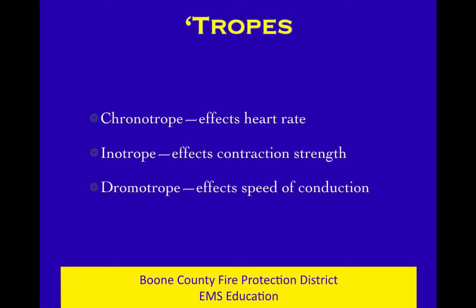Now we get to talk about the tropes. A chronotrope affects heart rate — a positive chronotrope increases heart rate, a negative chronotrope decreases it. Think of chronotrope and time: in chronological order, things are in order of time, so a chronotrope affects time, affects rate. An inotrope affects contraction strength. The ventricles contract harder with a positive inotrope, or weaker with a negative inotrope.